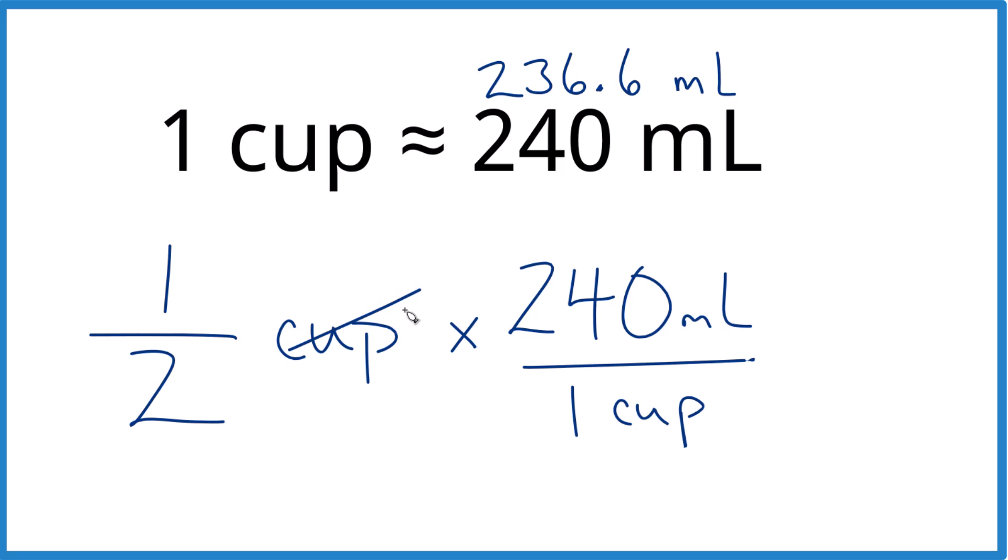Now you have cups here and here - they cancel out when you multiply. You're left with milliliters. One half of 240 milliliters is 120 milliliters, which isn't surprising. That's what we found before when we converted one half cup to milliliters. It's Dr. B. Thanks for watching.